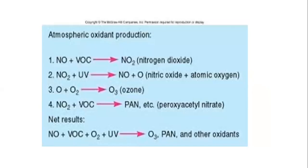The photochemical smog reaction: nitrogen oxide reacts with VOCs, producing NO2 (nitrogen dioxide). Then NO2 plus UV light forms NO (nitric oxide) plus atomic oxygen (O). Atomic oxygen plus O2 forms ozone (O3). NO2 plus VOC forms PAN (peroxyacetyl nitrate). The net result is that O2 plus UV forms ozone, PAN, and other oxidants.